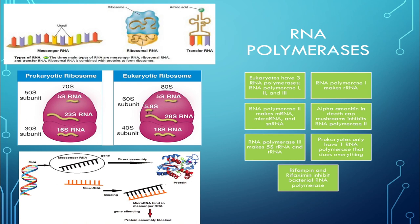RNA polymerase 3 makes 5s rRNA, which is a component of the ribosome, and it also makes tRNA, which is used to link codons to amino acids. It's important to note that RNA polymerase 3 makes the 5s rRNA, so RNA polymerase 1 does not make all of the rRNA in eukaryotes.